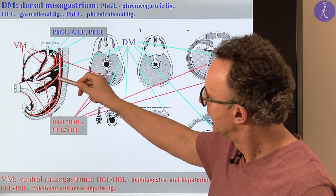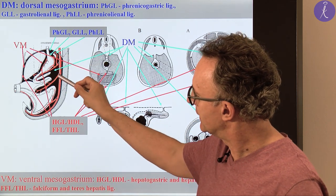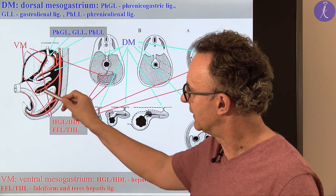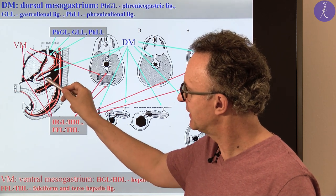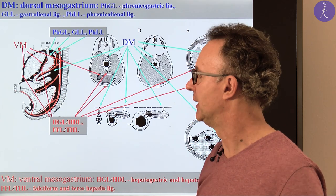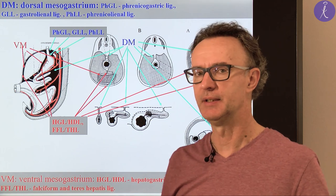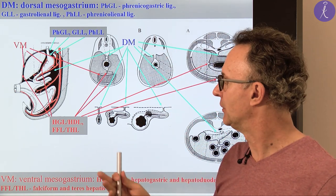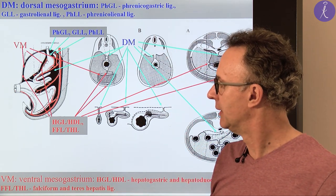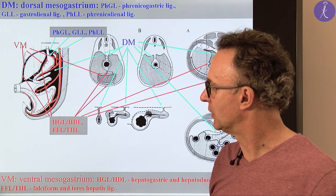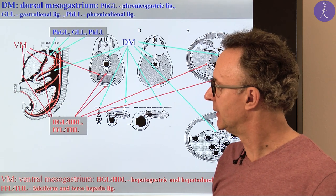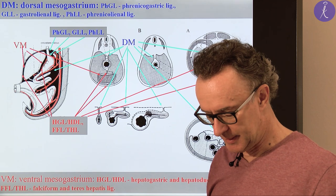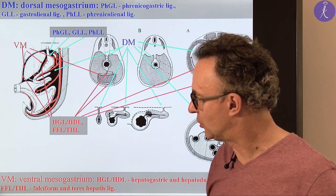Coming down, we will see the mesentery related to the small intestine, and part of the large intestine will also be intraperitoneal. We mentioned earlier the transverse and the sigmoid colon — that's why they also have a mesocolon from this duplicate. The dorsal mesogastrium descends until the distal point.